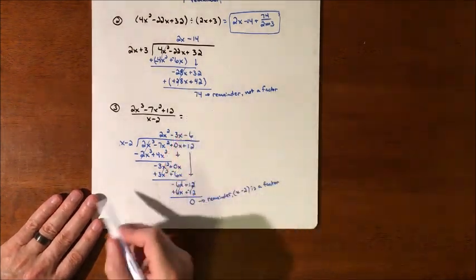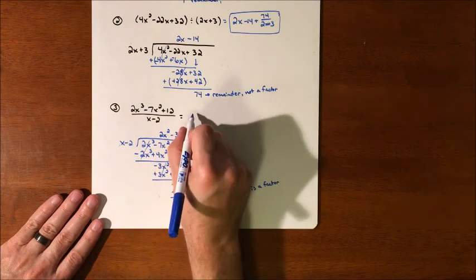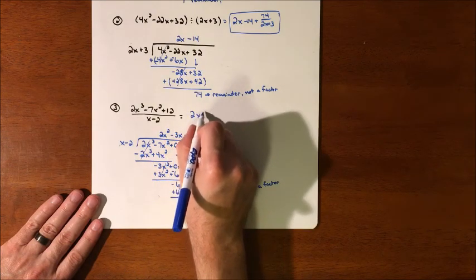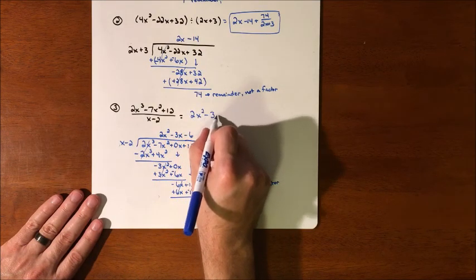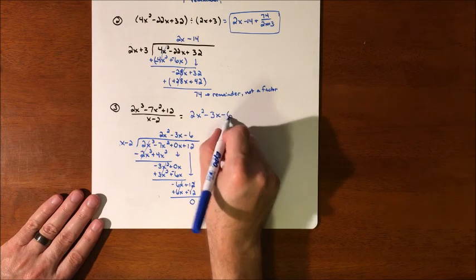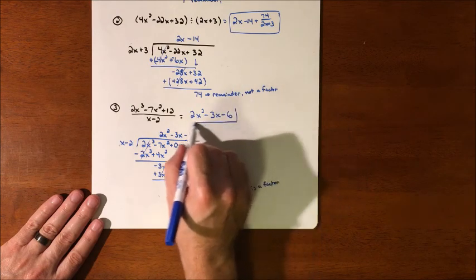The answer that we get out of this when we did divide it was 2x² minus 3x minus 6 with no remainder because it divided in evenly.